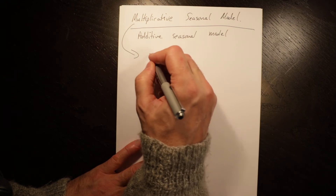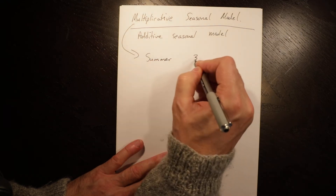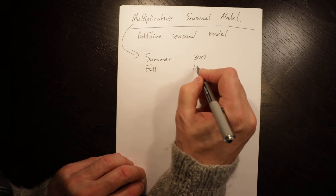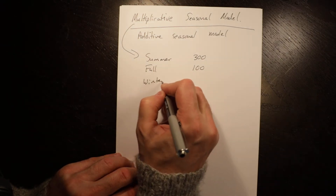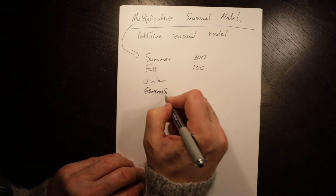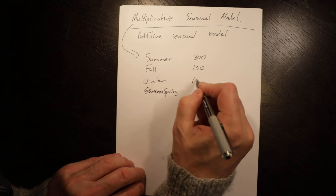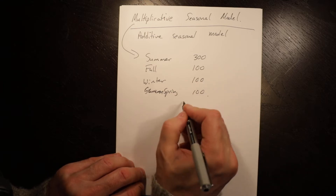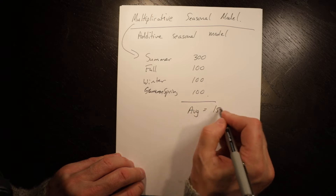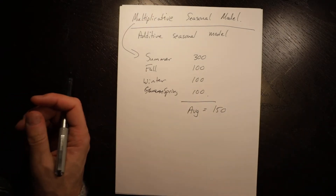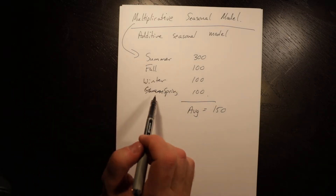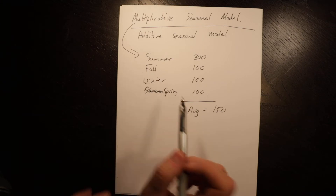Let's say these are our sales last year. Summer we sold 300, fall we sold 100, and winter and spring we sold 100 each. In that case our average is equal to 150. So on average every season we sell 150. Clearly in fall, winter, and spring we sell less, and in summer we sell a lot more.